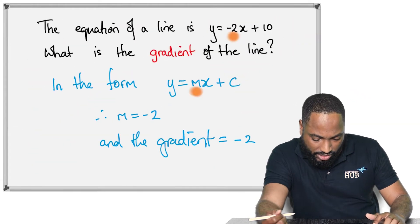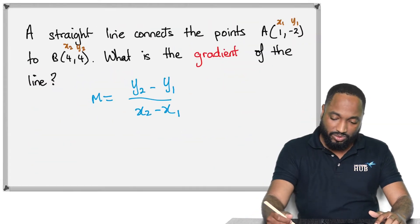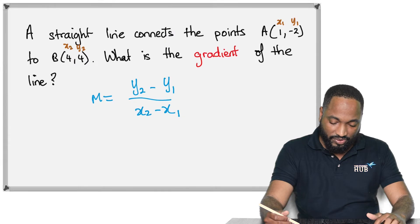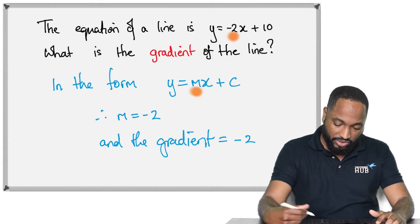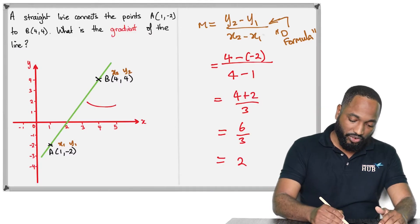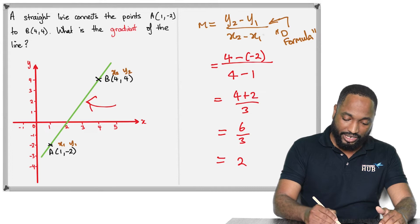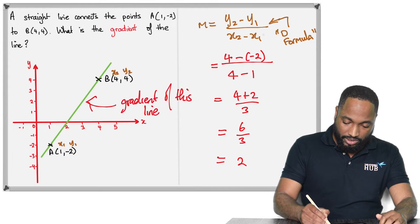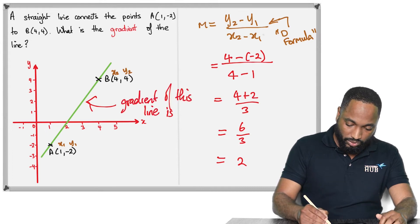This gives me a gradient of 2. What was the first gradient? Negative 2. In the first question the gradient was -2; in this question the gradient is positive 2. The gradient of this line is 2.